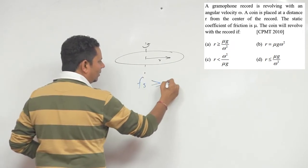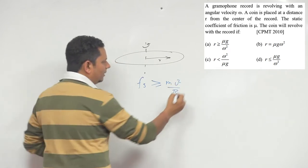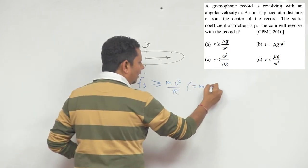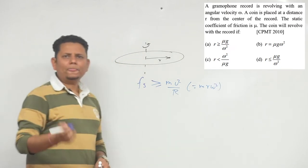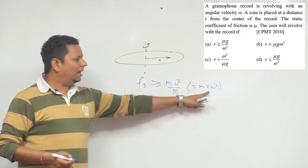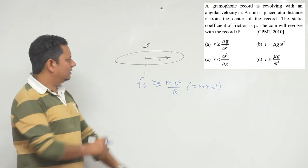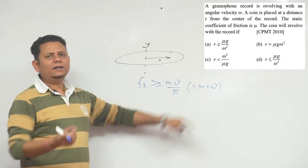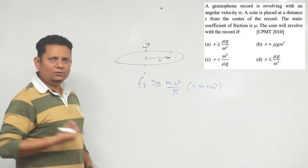Since we need the answer in terms of omega, the friction force must be greater than or equal to mrω². If the friction force is sufficient, the coin rotates with the record; otherwise, while the gramophone rotates, the coin will slide outward.